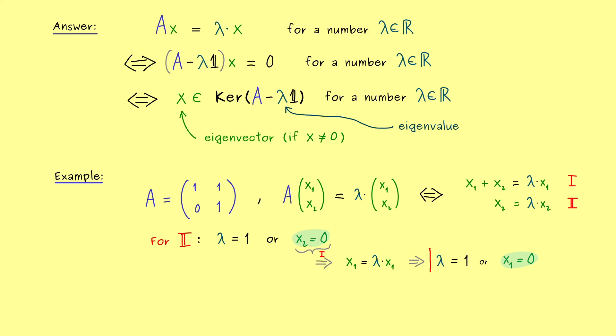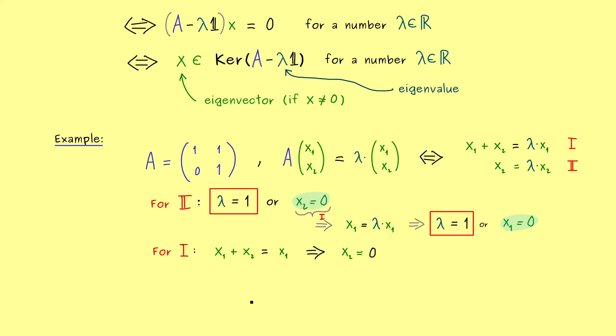In conclusion, we get that the only possible eigenvalue will be lambda is equal to 1. And now this solution, we can put into the first equation to get all possible eigenvectors. Namely, the first equation now reads x_1 plus x_2 is equal to x_1, which means x_2 has to be equal to 0. However, it also implies that x_1 can be chosen as we want. So you see, no matter how we choose x_1, this equation here is always satisfied.